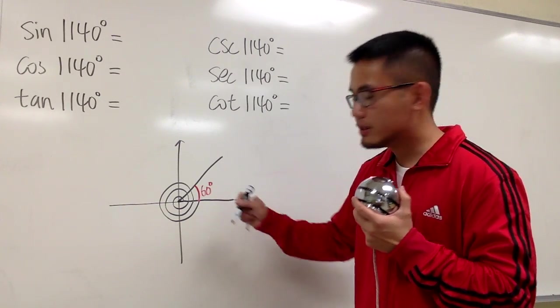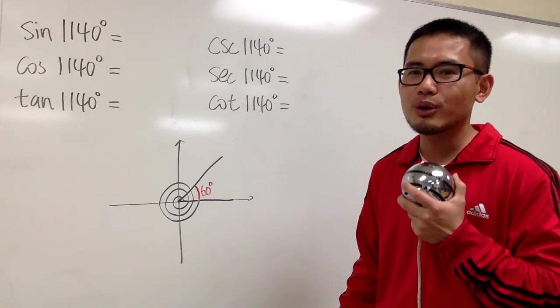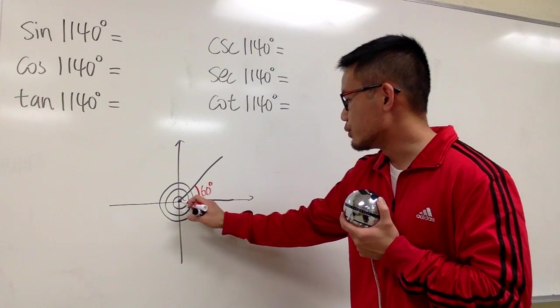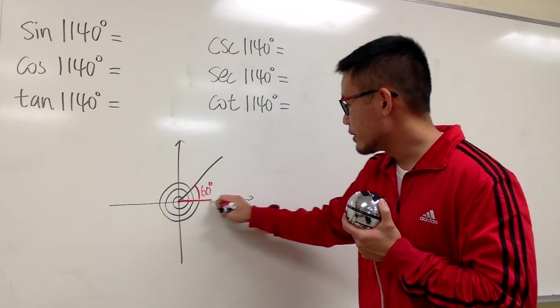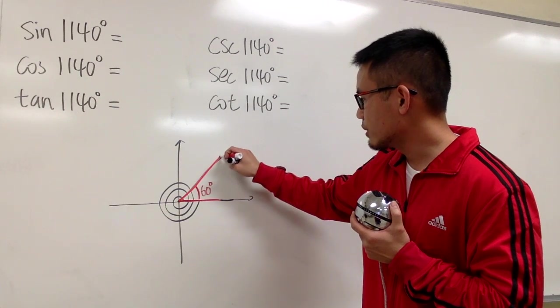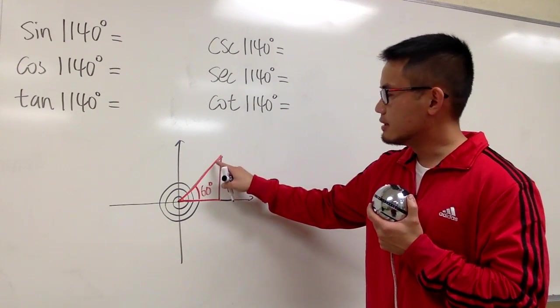That means we are going to use the 30, 60, 90 special right triangle. And you are just going to draw it right here, right? So, perhaps I will just make this in red. So, this much right here. And this is the terminal side. And let me just draw the right triangle like this, okay? This is 60 degrees. That means this is going to be 30.